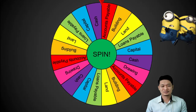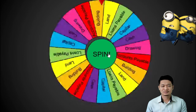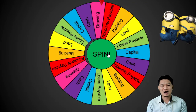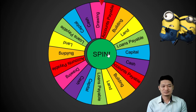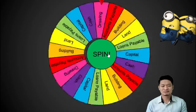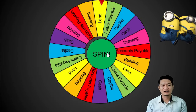For our first account: drawing. How will you identify drawing? Is it an asset, liability, or owner's equity? Very good! It is owner's equity. Next spin! Our next account is land. How will you identify land? Very good! It is part of an asset.